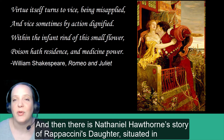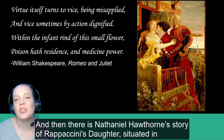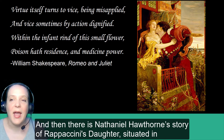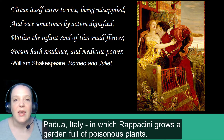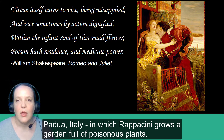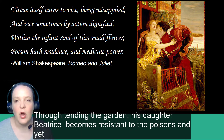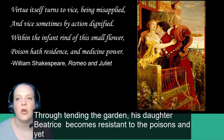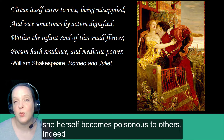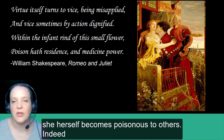And then there is Nathaniel Hawthorne's story of Rappaccini's Daughter, situated in Padua, Italy, in which Rappaccini grows a garden full of poisonous plants. Through tending the garden, his daughter Beatrice becomes resistant to the poisons, and yet she herself becomes poisonous to others.